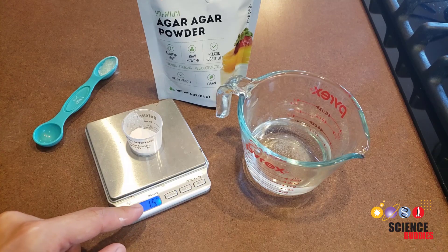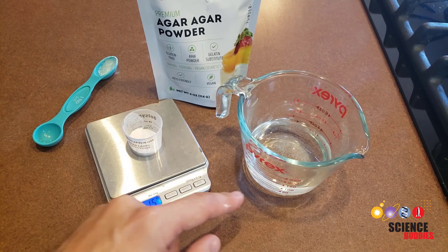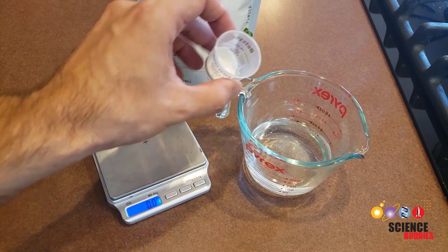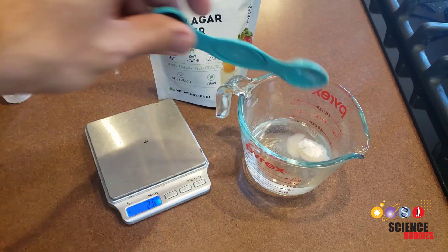Start by measuring 1.5 grams of agar powder and 100 milliliters of water. Add the agar to the water and stir to mix thoroughly.